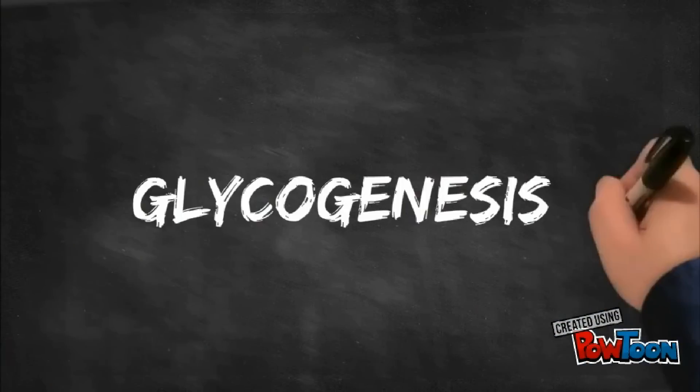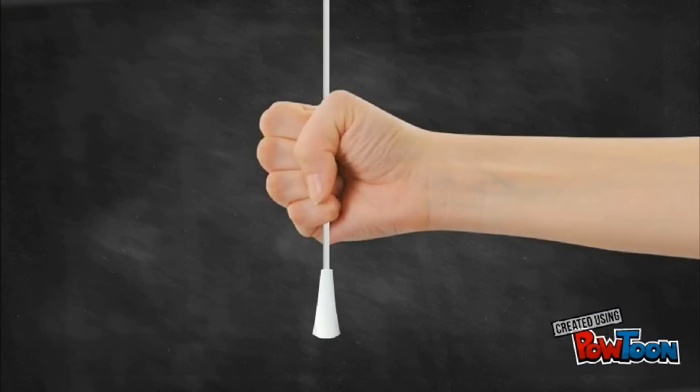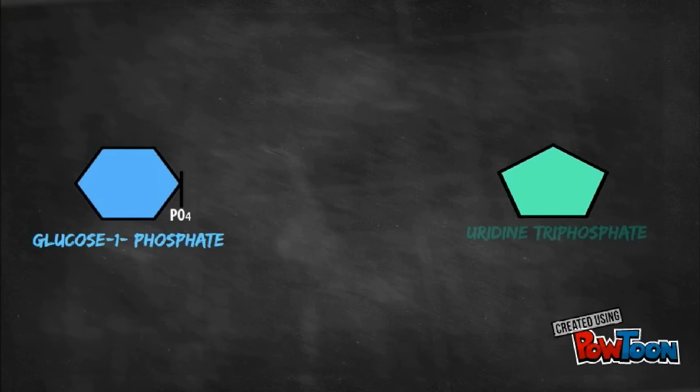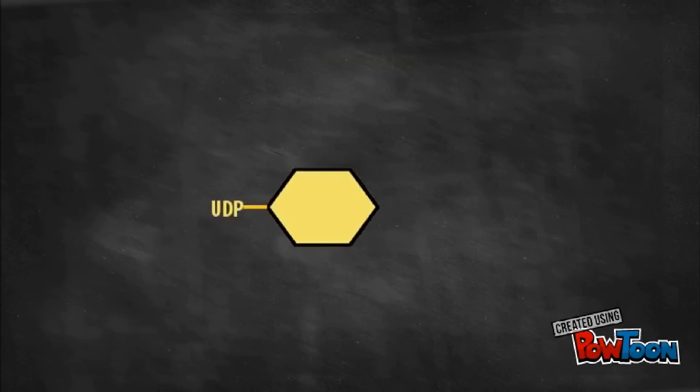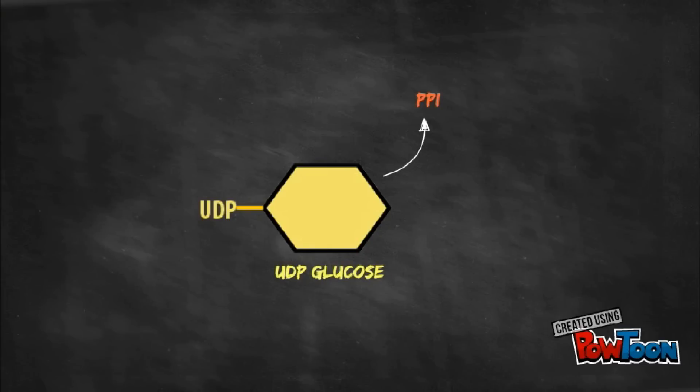Let's first discuss glycogenesis, which is composed of four steps. Step 1, the synthesis of uridine diphosphate glucose. It is synthesized from glucose 1-phosphate and uridine triphosphate, acted upon by the enzyme UDP glucose pyrophosphorylase, forming uridine diphosphate glucose.